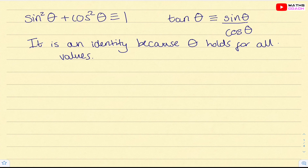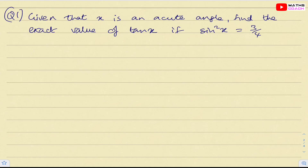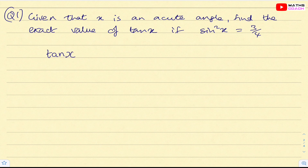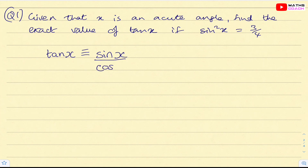Let's start with a straightforward example. Given that x is an acute angle, find the exact value of tan x if sin squared x equals three quarters. Our end goal is to find tan x, and the only way we can do that is using the identity tan x equals sin x over cos x. We're using x to refer to the angle rather than theta because it is in the context of the question.